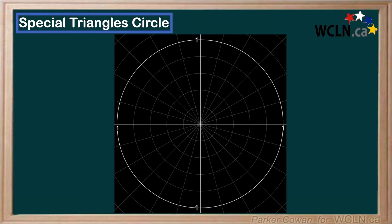So the three things we need to remember are basically those three main angles that we see in the special triangle circle, right? And that's going to be 30, 60, and 45.